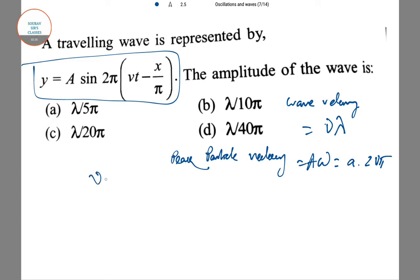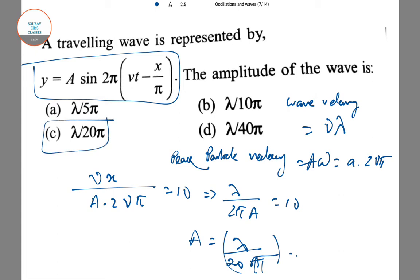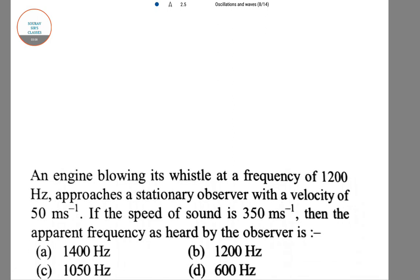Given that a × 2πν = 10, the amplitude of the wave comes as λ/20π. That's it. So λ/20π. Sorry, λ/20π. So option C is correct. Next we are going to the question on engine.